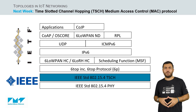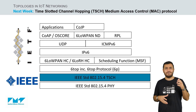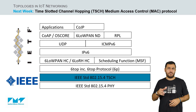Next, in week one, we will start with a protocol stack that is adapted to the Internet of Things, and more precisely, we will tackle the second layer, in which we will study the time-slotted channel-hopping TSCH medium access control protocol. Now, are you ready? Let's start!